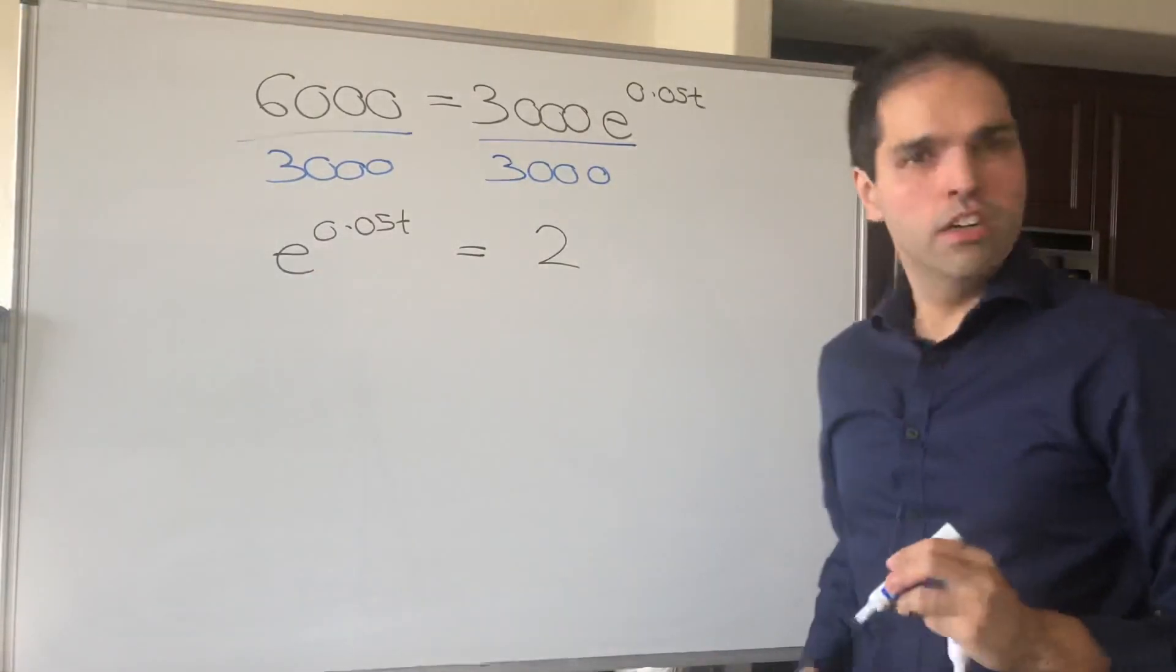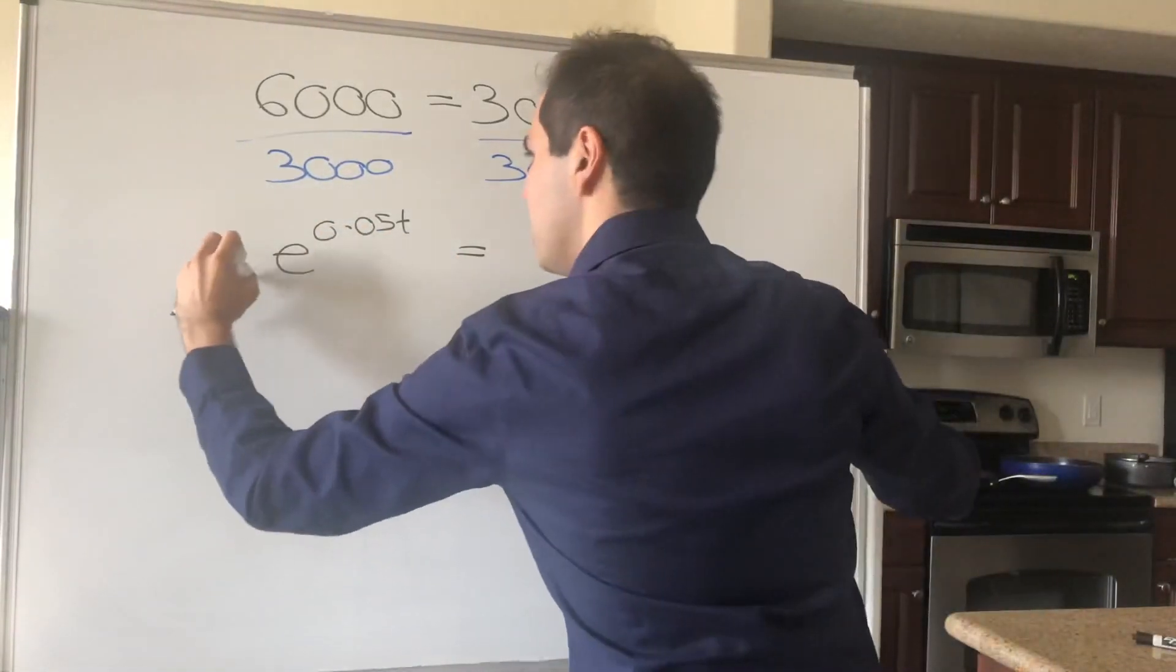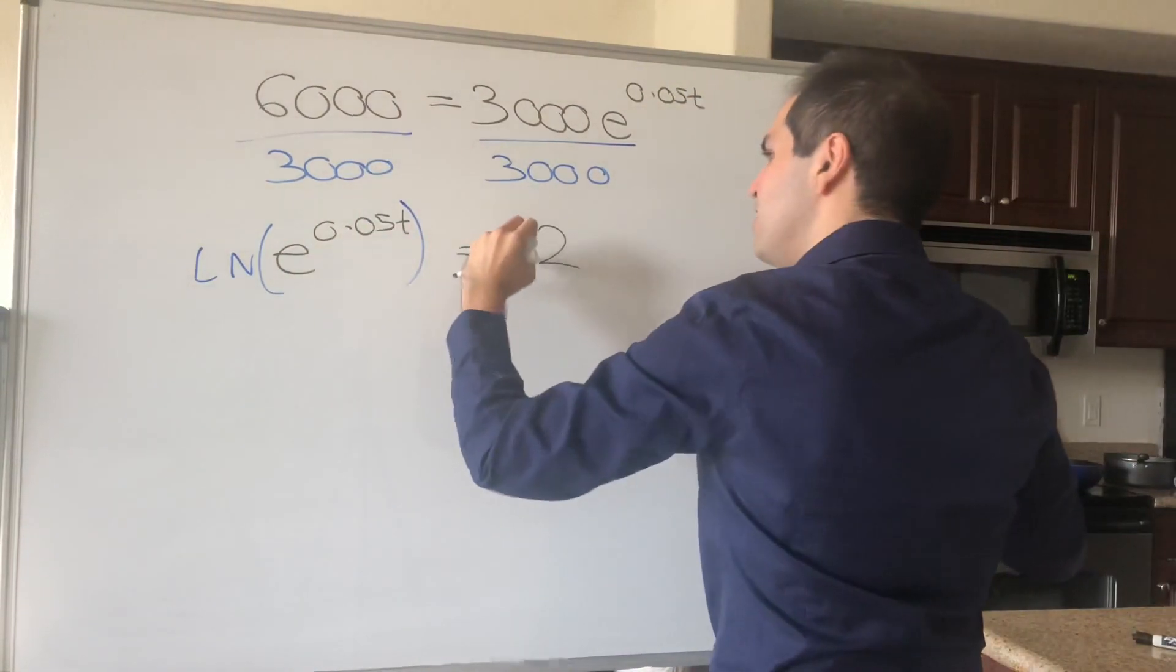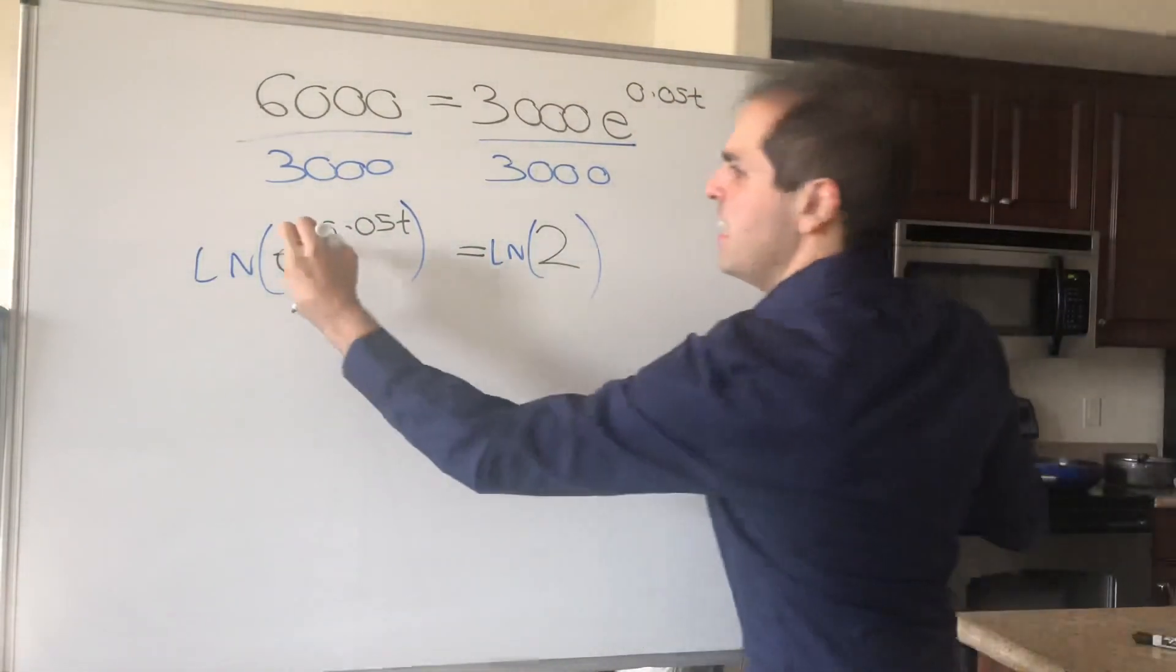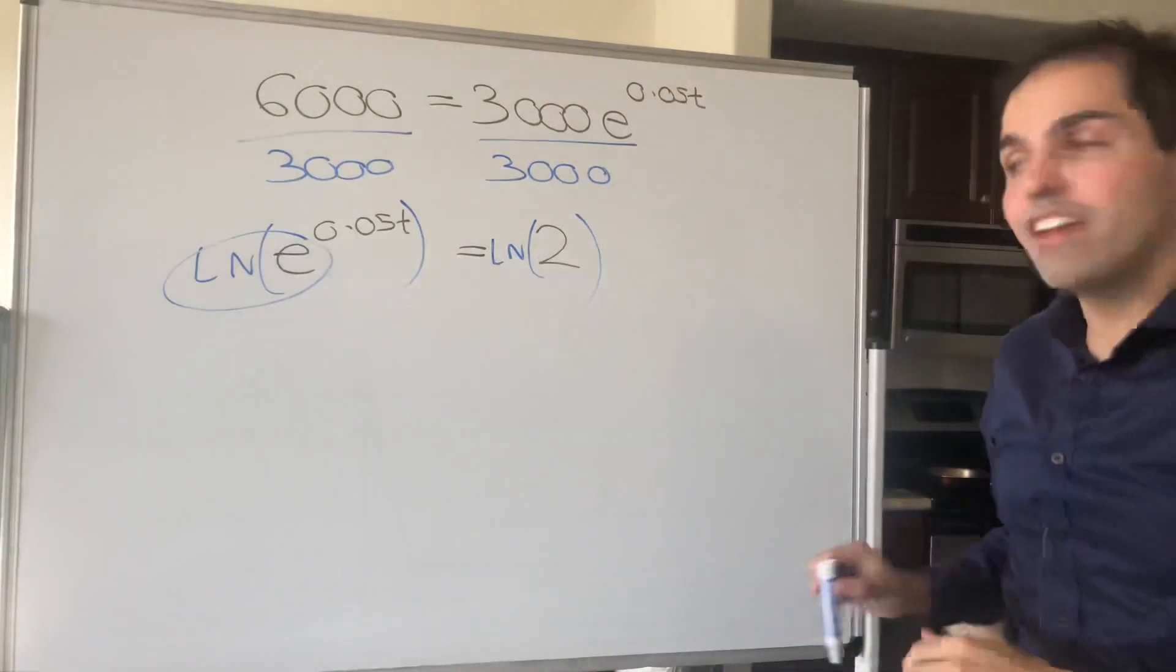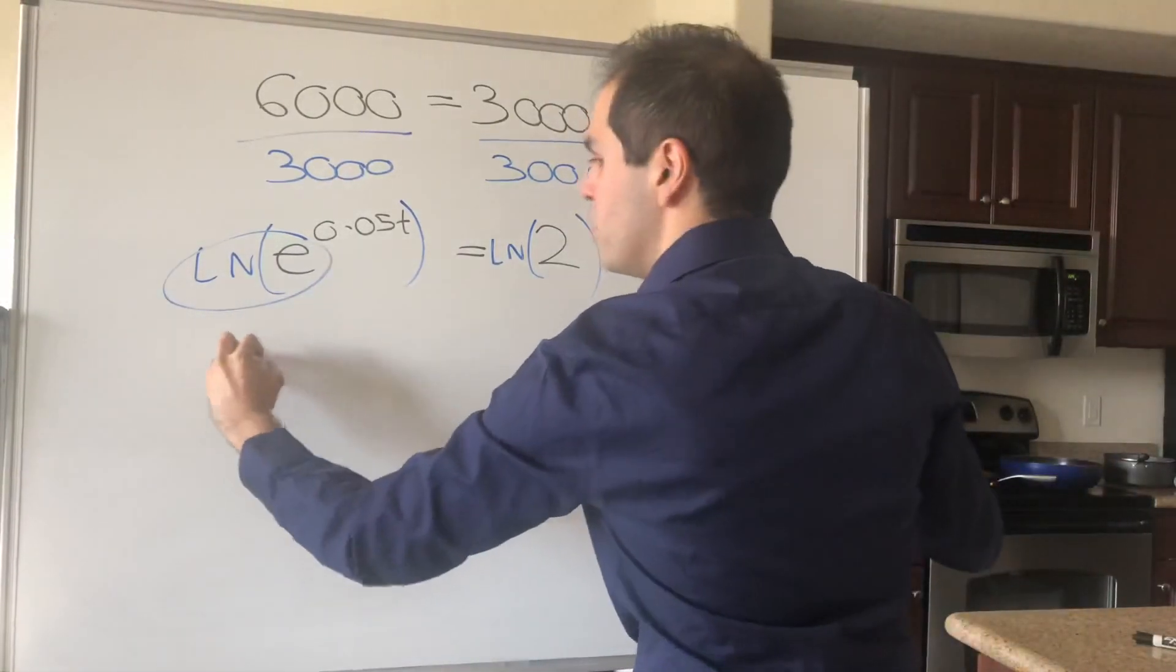And in order to get rid of this E, we use LN, the destroyer of all E's, because LN of E of 0.05T just becomes 0.05T.